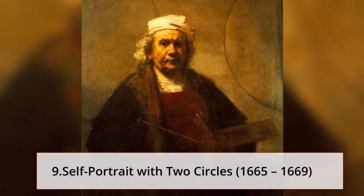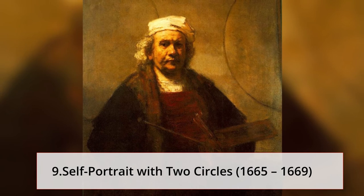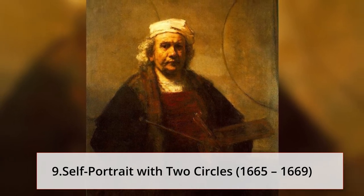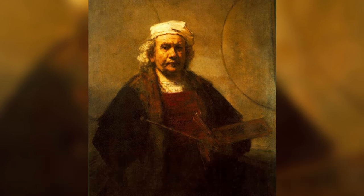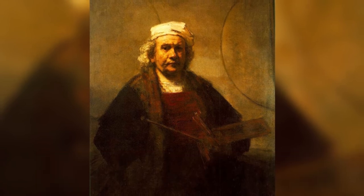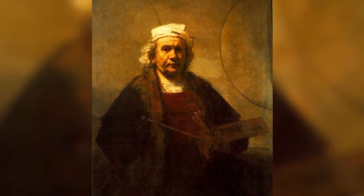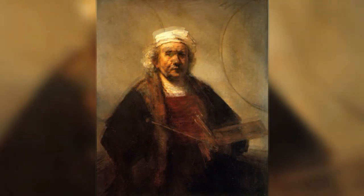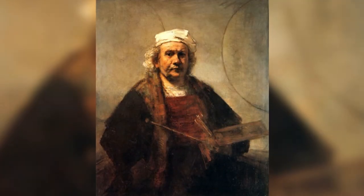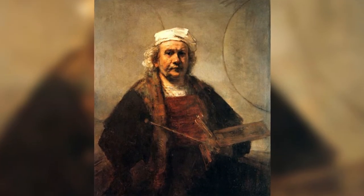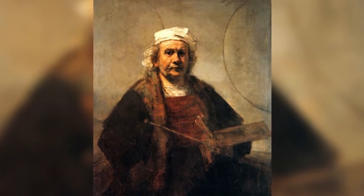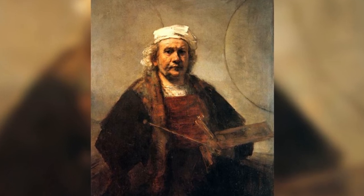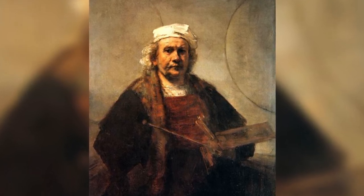9. Self-portrait with Two Circles, 1665–1669. The painting depicts him at work, holding his mahl stick, palette, and brushes. In the background, there are two mysterious semi-circles.